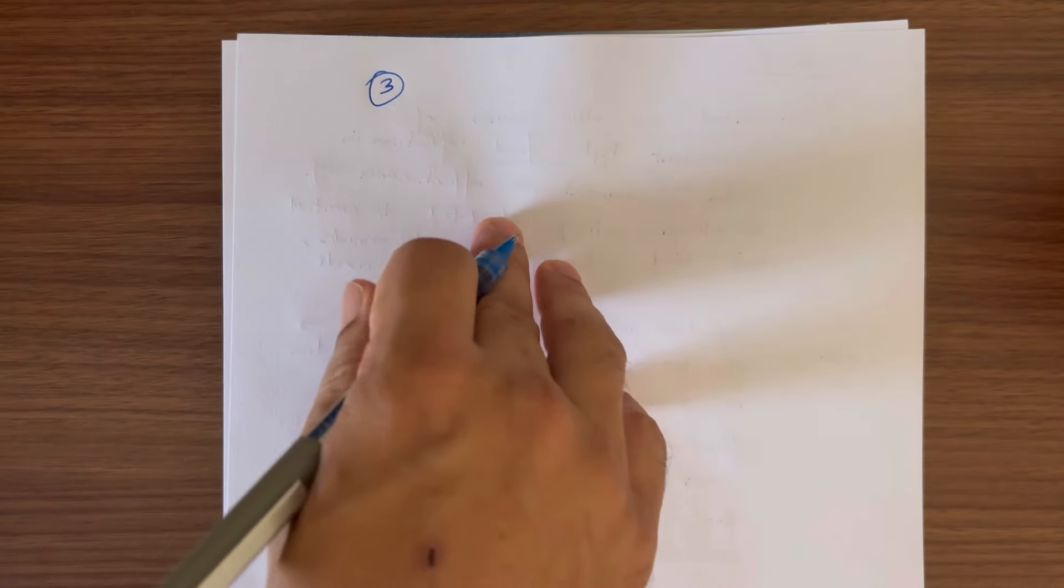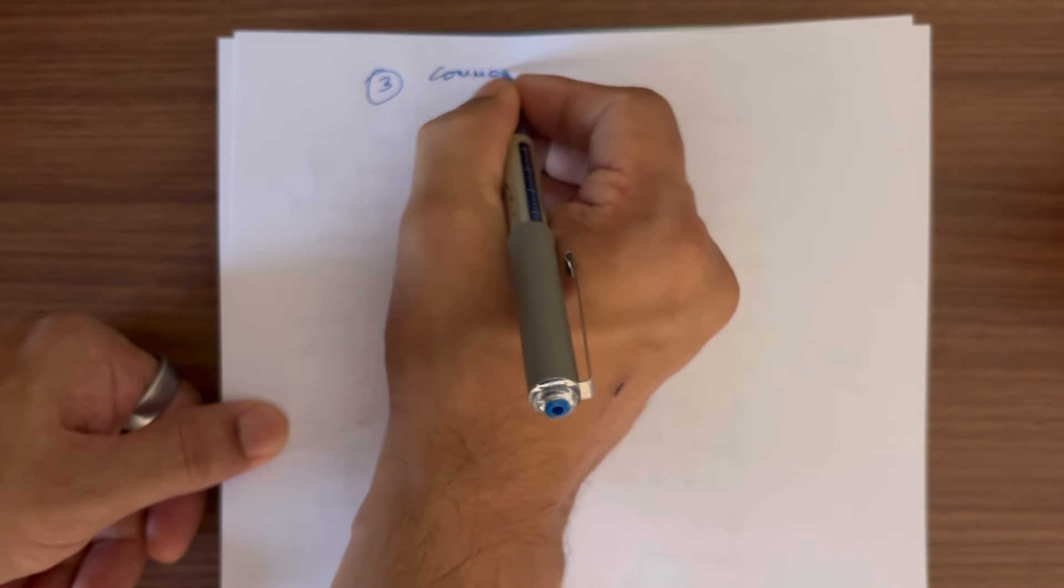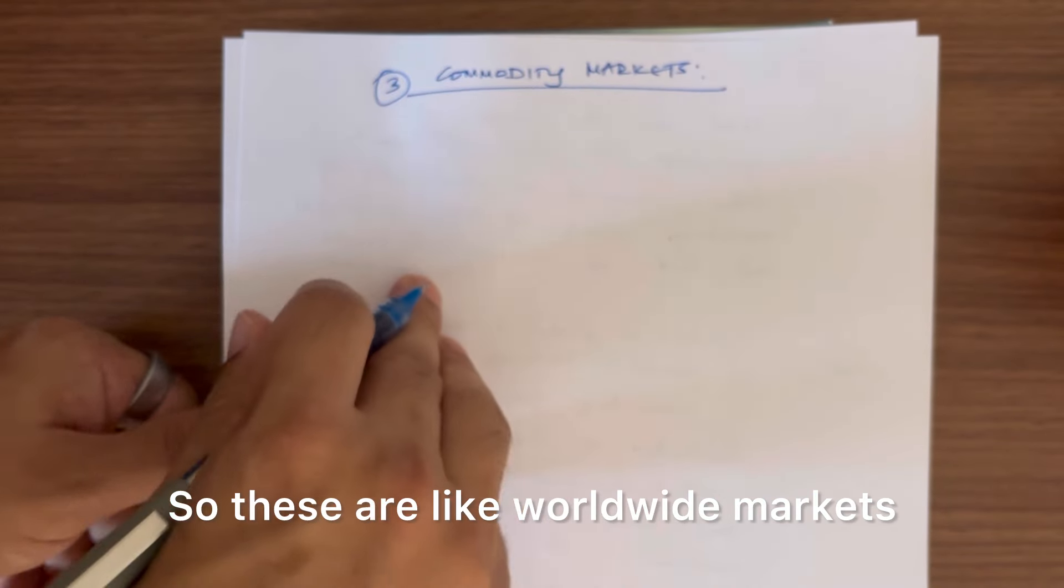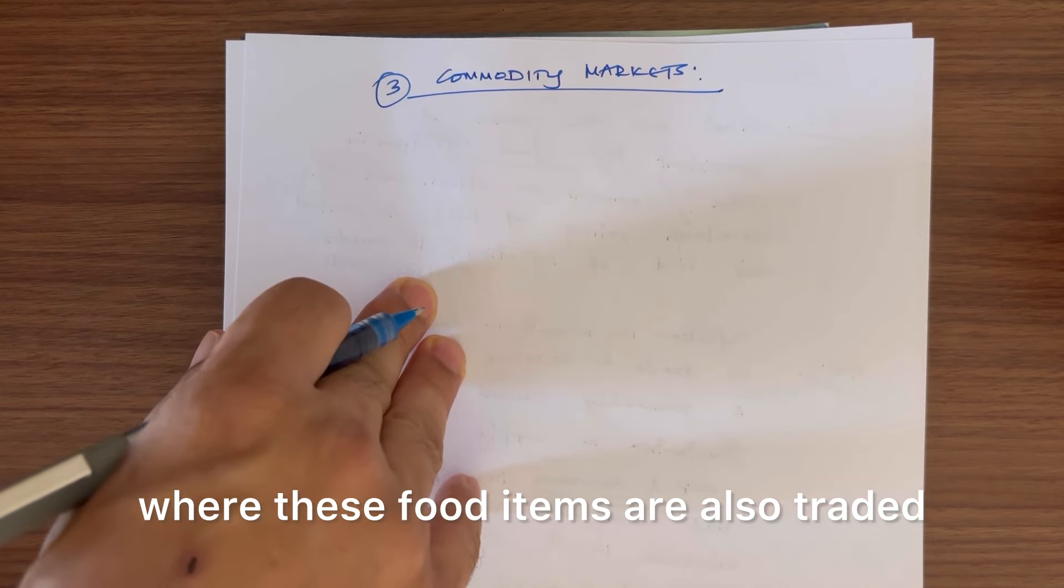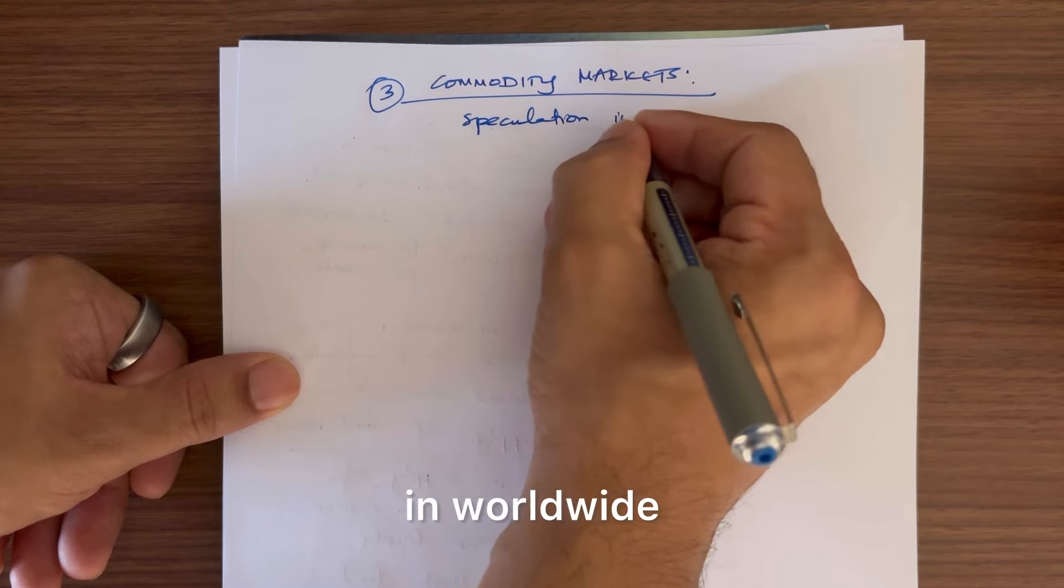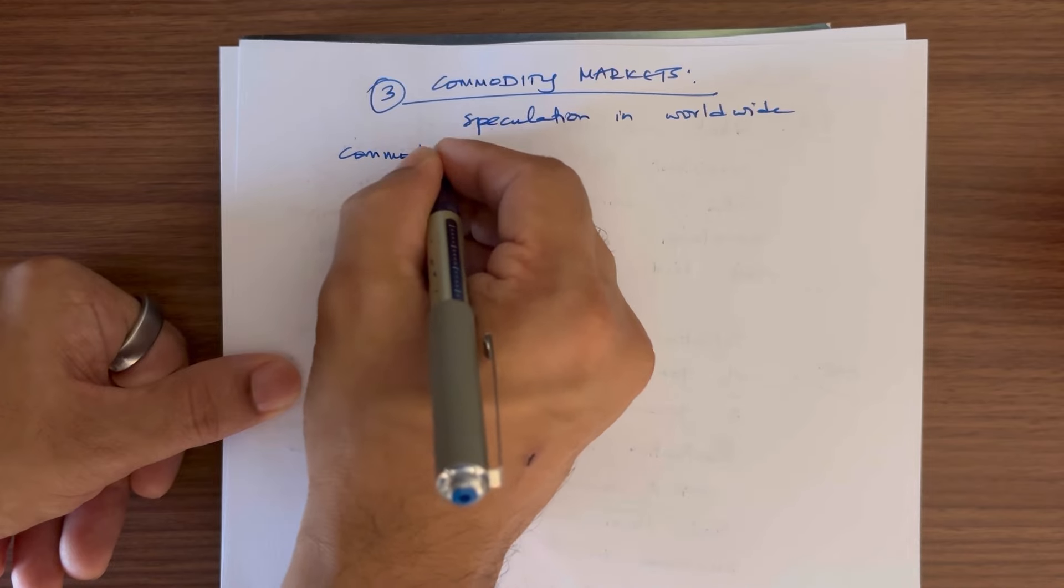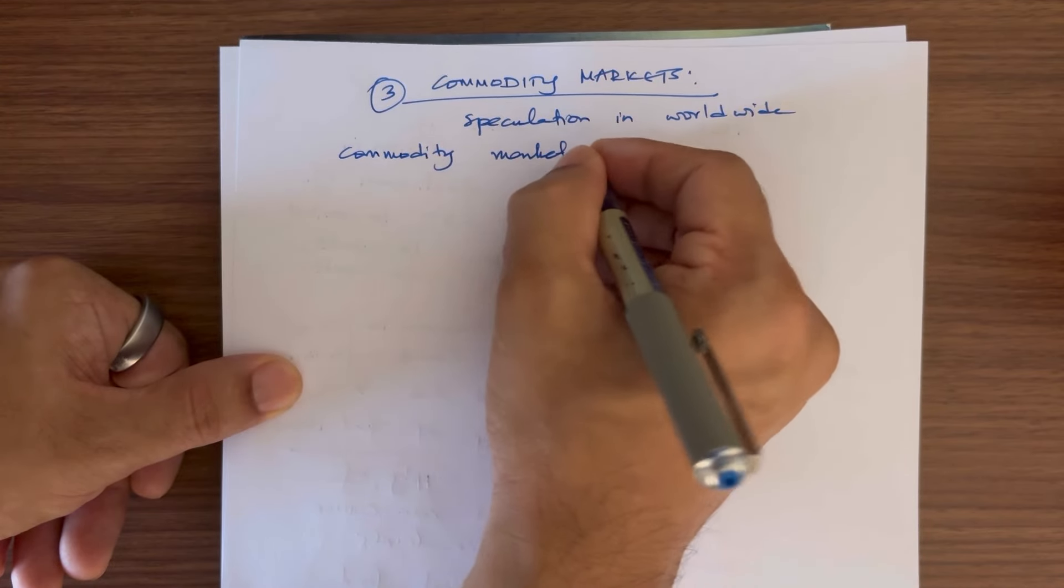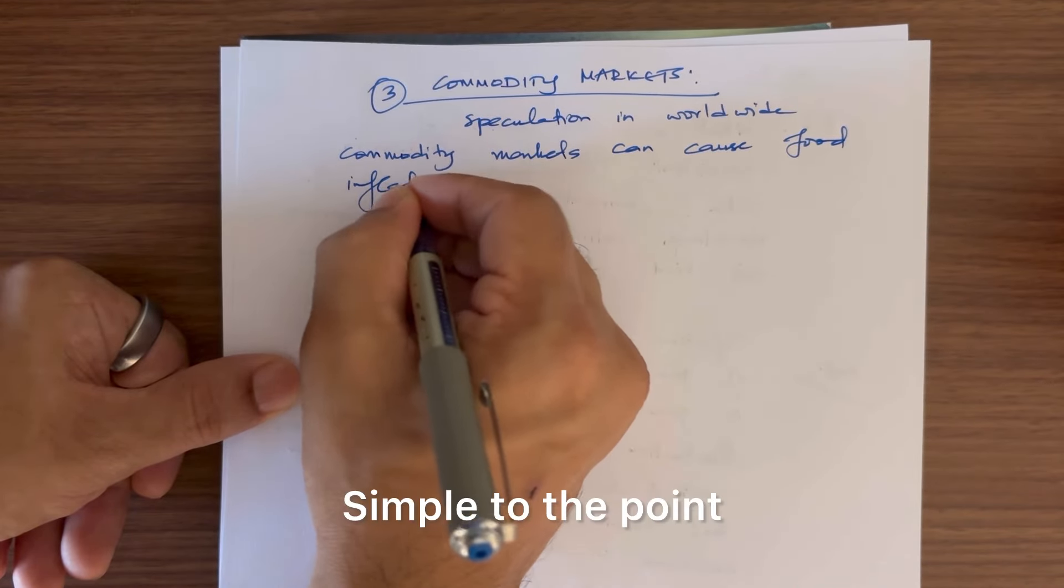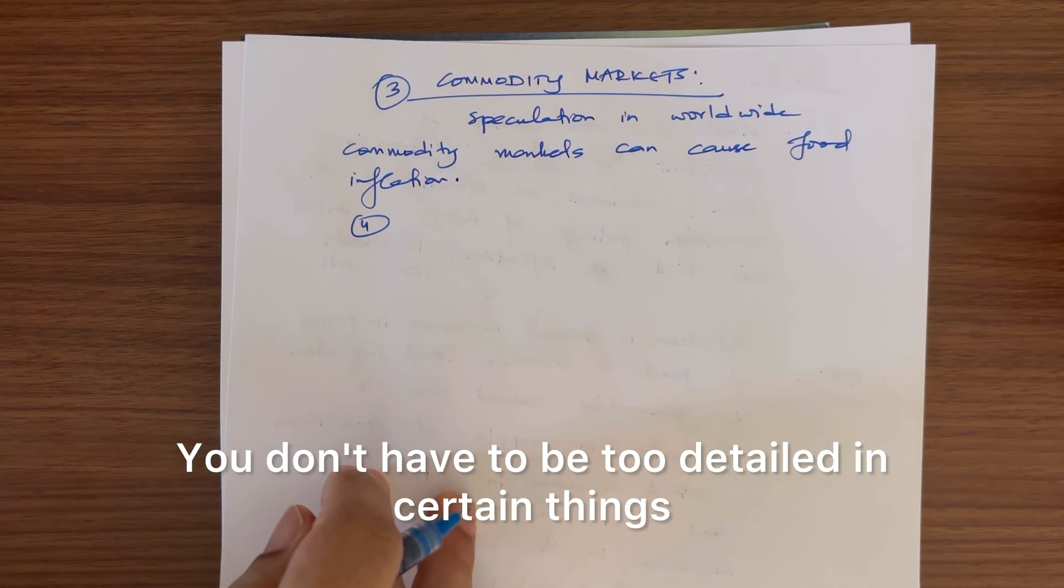In the third point, we can write about the commodity markets. These are worldwide markets where these food items are also traded. Speculation in worldwide commodity markets can cause food inflation. Simple to the point. No fuss. You don't have to be too detailed in certain things.